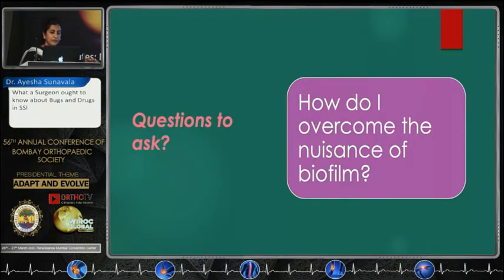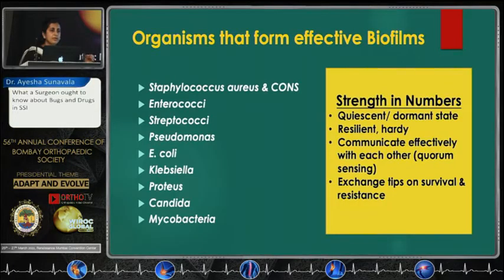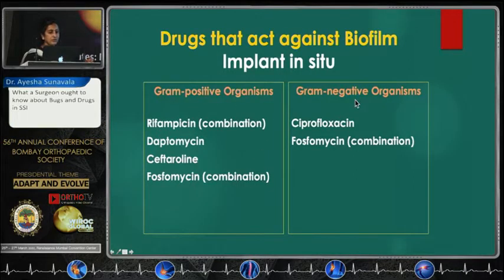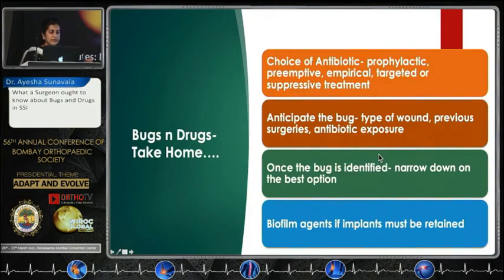Finally, how do I overcome the nuisance of biofilm? Unfortunately, most organisms causing implant-associated infections in orthopedics form very effective biofilms — they have strength in numbers. The drugs that act against biofilm are few. For gram-positive organisms, rifampicin and fosfomycin must be used in combination. For gram-negative pathogens, ciprofloxacin is really the only go-to choice, with fosfomycin in combination. The treatment choice depends on whether you are using it for prophylactic, pre-emptive, empiric, targeted, or suppressive treatment.